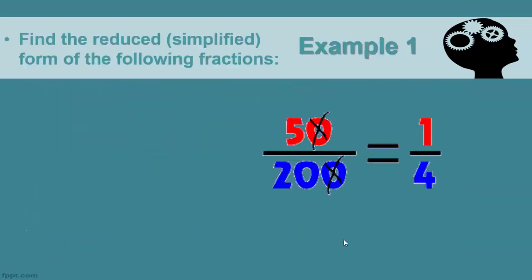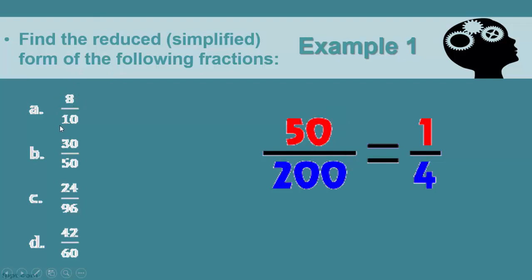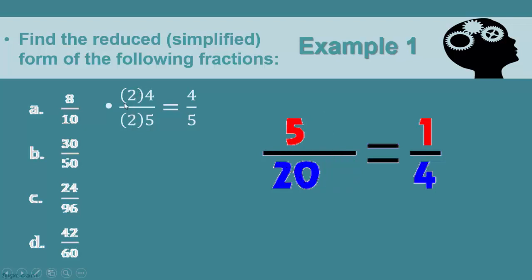In example number one, we're asked to find the reduced, simplified form of the following fractions. Looking at fraction A, two can divide into both eight and ten. So we factor out two from eight and two from ten; since these are the same, we can cancel them out, and that's how we get four-fifths.